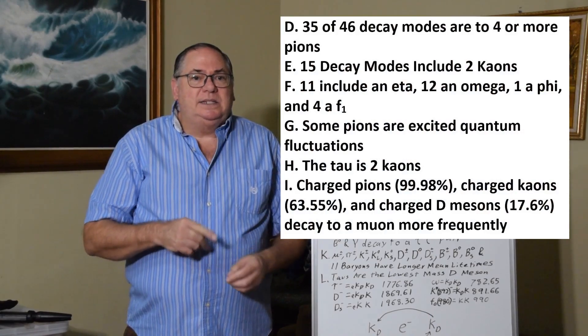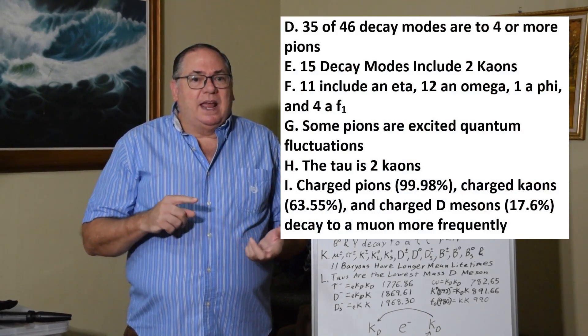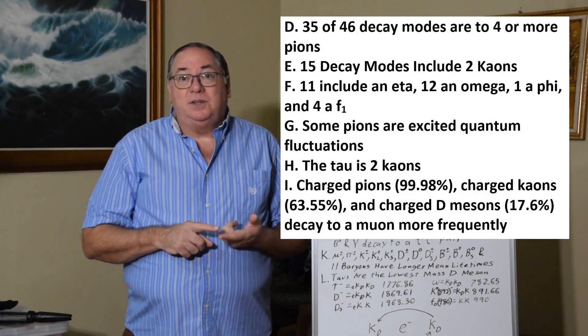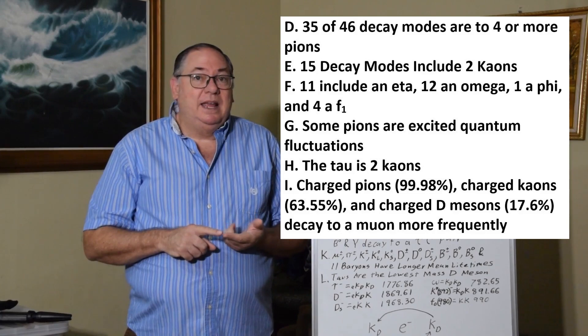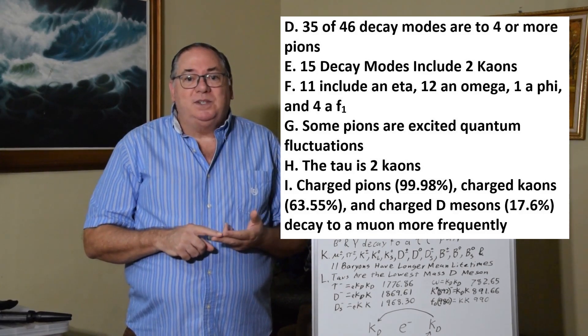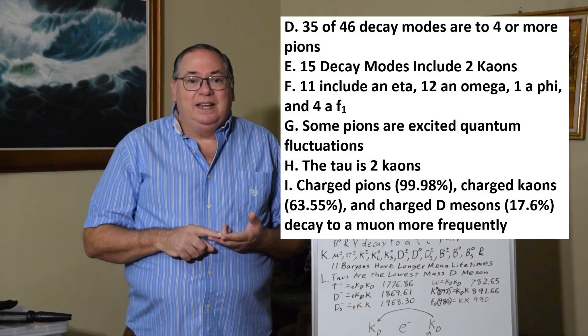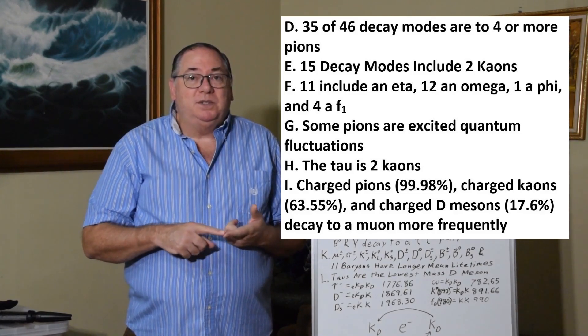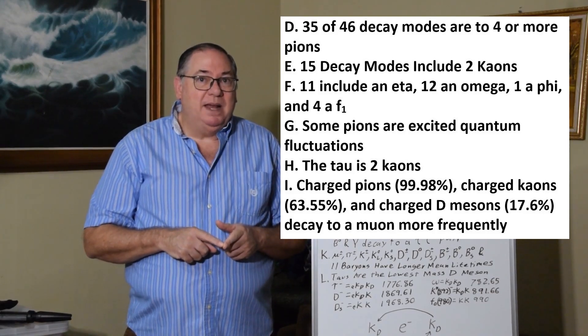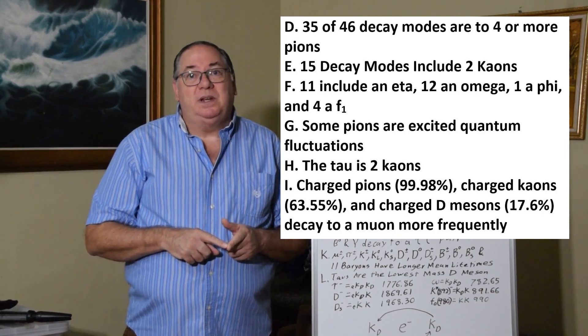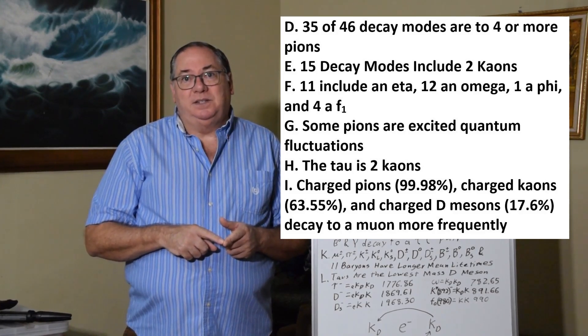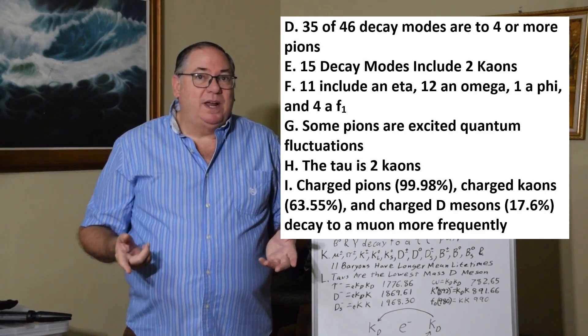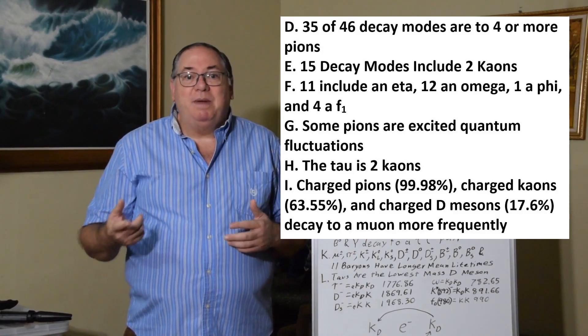So we have a case where the most common decays aren't even to the muon, which is what you'd expect. And I list here that 99% of the pions decay to a muon, so they're closely related. And then you have 65% of a charged k-on, and even more, over 17% of a charged d-meson decay to a muon more frequently than the tau decays to a muon. So it makes the tau look more like a d-meson, and I'll come back to that.